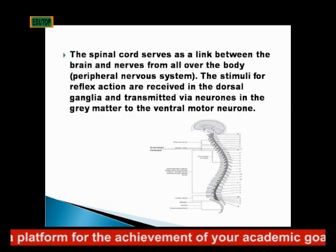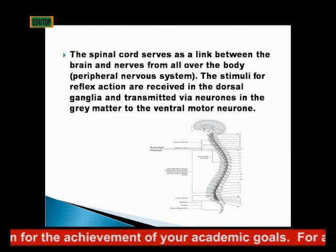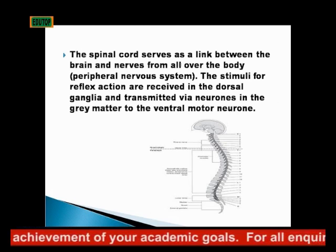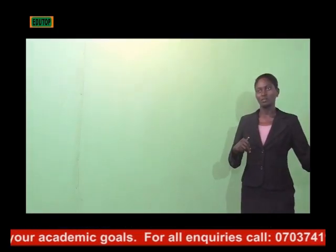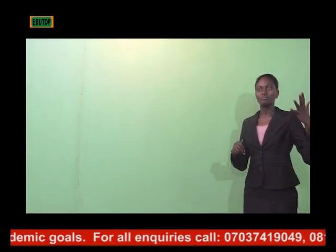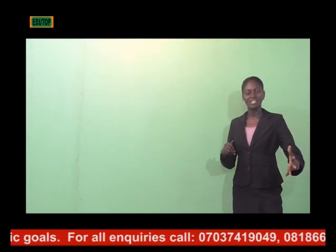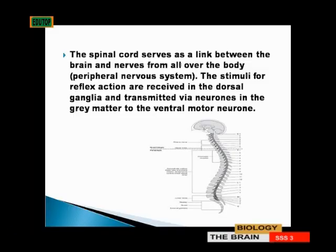The spinal cord serves as a link between the brain and the nerves from all over the body — that is, between the brain and the peripheral nervous system. The stimuli for reflex action are received in the dorsal ganglia and are transmitted via neurons in the gray matter to the ventral motor neuron.